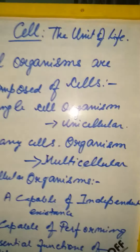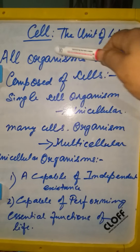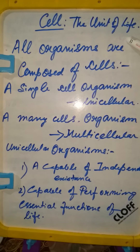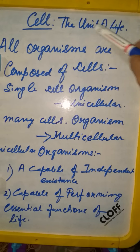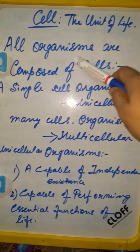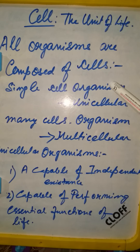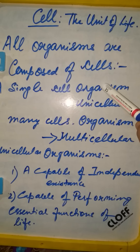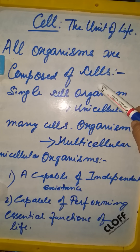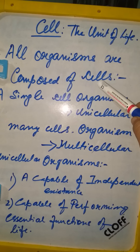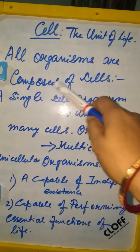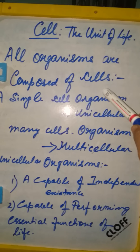So what is a cell? Cell is basically the unit of life. Unit of life means all organisms are composed of cells. Whatever living organism you see around you, whether it is a plant cell or an animal cell, whether it is unicellular or multicellular, they are all made up of cells.